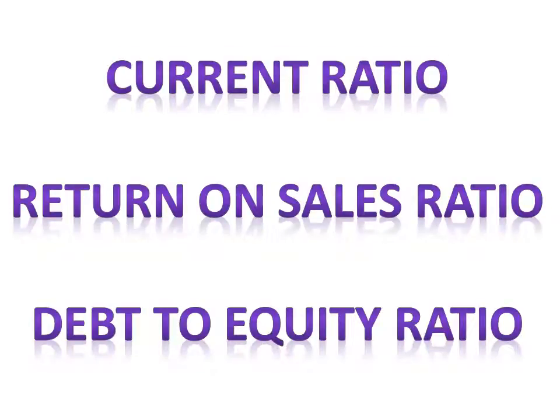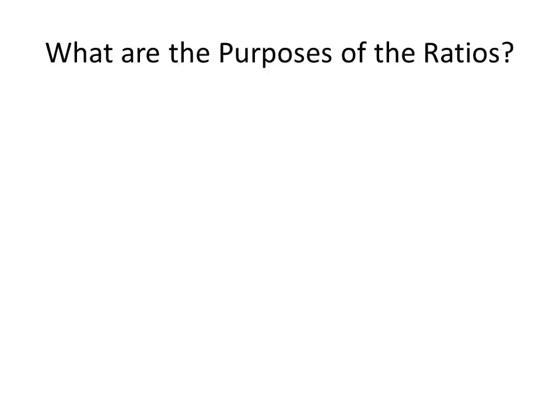Today we're going to take a look at three different ratios: the current ratio, return on sales ratio, and debt to equity ratio. These are three of the many ratios that are used to ultimately find the health of the business, how well they're doing, how poor they're doing, and where they can improve.